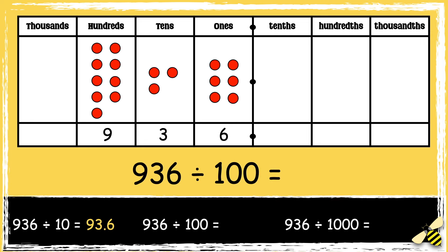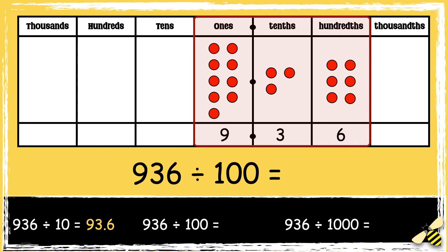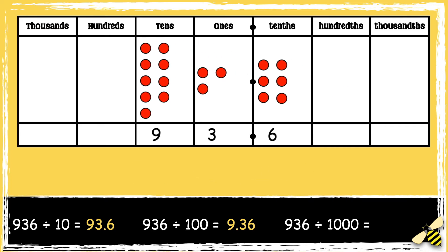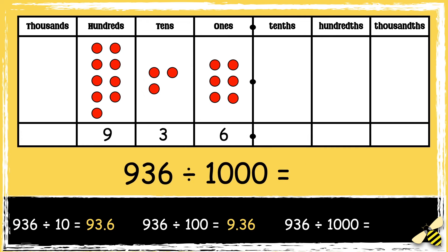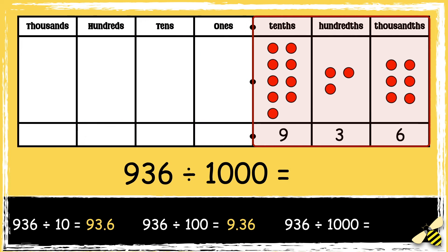Now let's divide the number by 100. When we divide numbers by 100, the digits move two spaces to the right. We need to use zero as a placeholder to show that there are no ones. Now let's divide the number by 1000. When we divide numbers by 1000, the digits move three places to the right. We need to use zero as a placeholder to show that there are no ones. So the answer is 0.936.